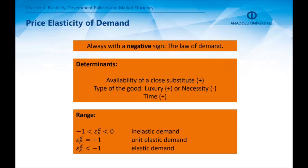Price elasticity of demand always has a negative value because of the law of demand. Availability of close substitutes increases the absolute value of the elasticity. The type of the good also determines the value — the more luxurious the good is, the higher the absolute value of the elasticity. Lastly, longer periods of time cause a higher elasticity value.